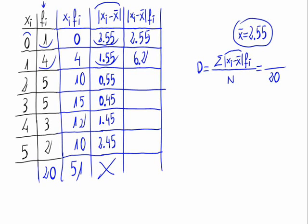Doing this with all the f sub i's, we have 2.75, 2.25, 4.35, and 4.9.